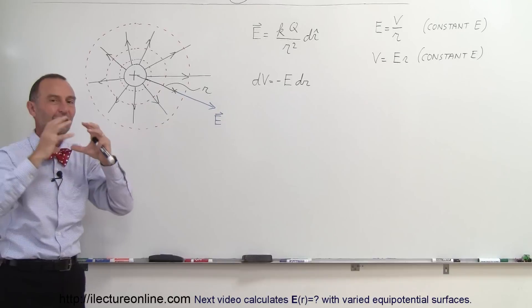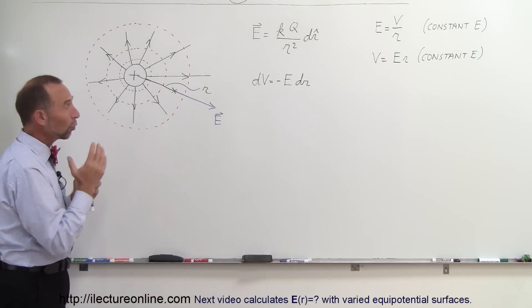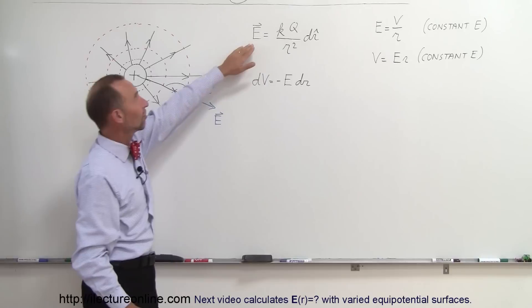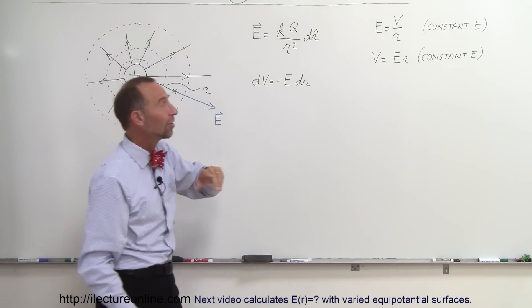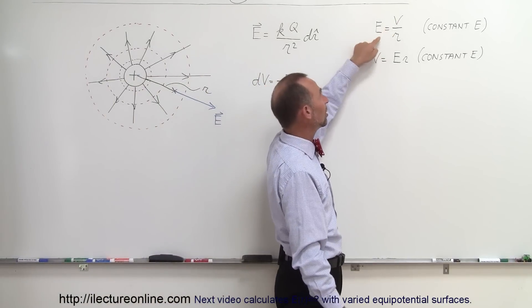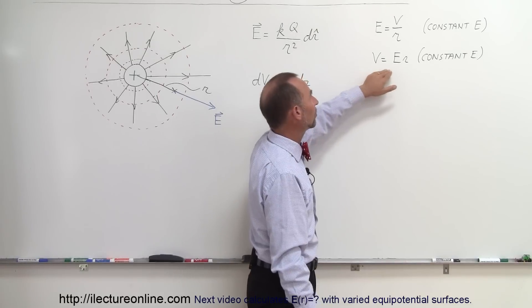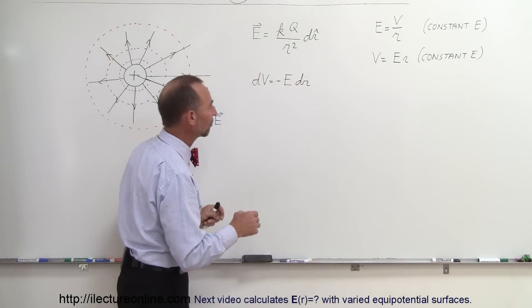These dashed lines represent spheres around the charge at the center. Going back to the equation that represents the electric field as a function of distance, realizing that when the electric field is constant the relation between electric field and potential is E equals V over R, or V equals E times R. Again that's under constant conditions, constant electric field conditions.